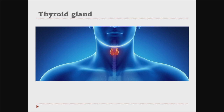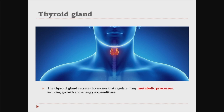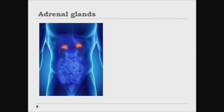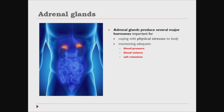The thyroid gland, located here in the neck, is a very important gland which secretes hormones that regulate many metabolic processes, including growth and energy expenditure. The adrenal glands are very small glands localized just above the kidneys, and they produce several major hormones important for coping with physical stress and maintaining adequate blood pressure, blood volume, and salt retention.